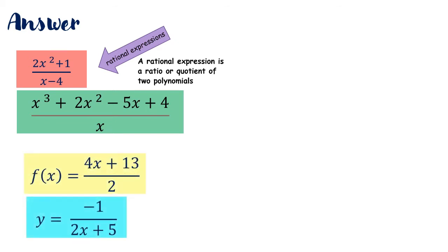The second grouping is the rational function group. Remember, a function is denoted by f of x, or you may also denote it as y. You have here a rational expression, so we have f of x is equal to 4x plus 13 all over 2, and y is equal to negative 1 over 2x plus 5. These are rational functions.